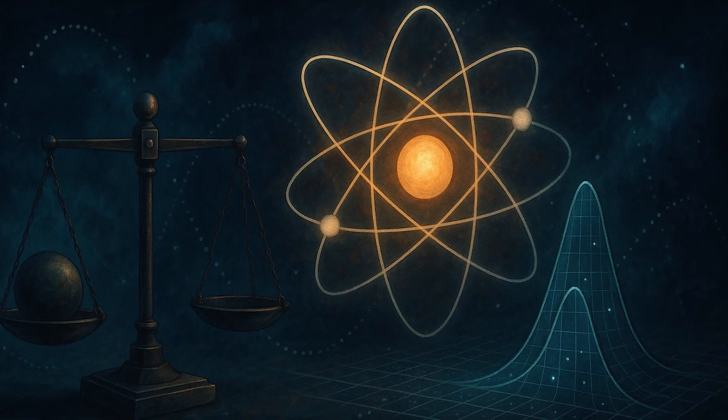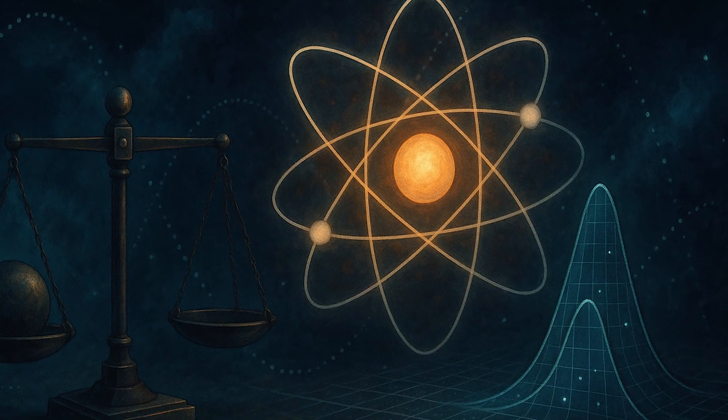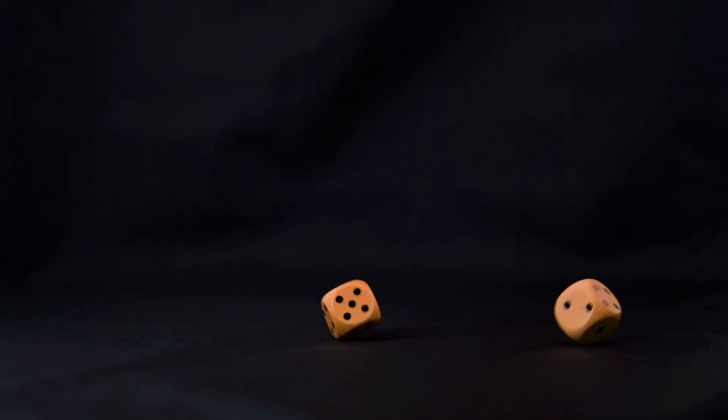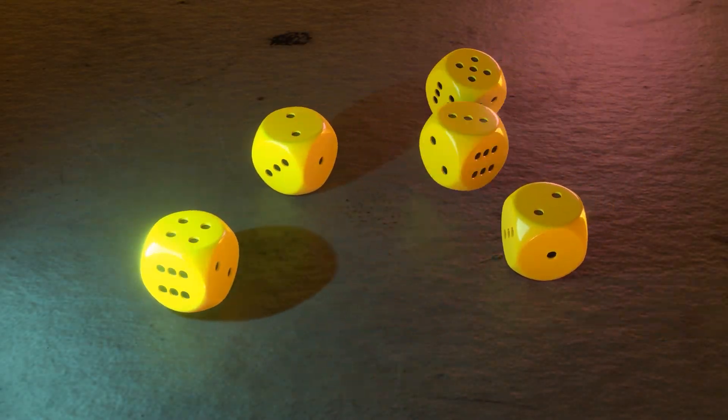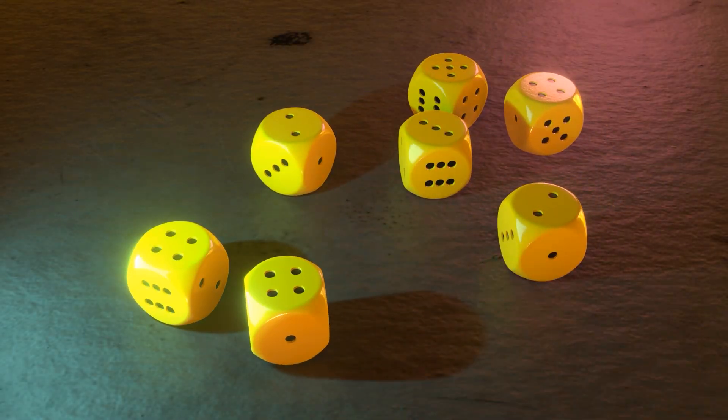Quantum physics doesn't describe certainty. It describes probabilities. Imagine you're rolling a die. Classical physics would let you predict exactly how it lands if you know all the starting conditions. Quantum physics, however, says the die exists in all possible states until you look at it.